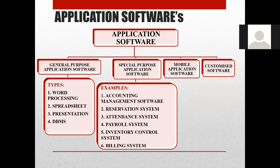Today we are going to learn about application softwares. Application softwares are designed for a specific task, for a particular purpose. These are not necessary for the operation of a computer, but they are designed to do a particular task. Like if I want to type letters, there are many types of software for that. If I want to do statistical calculations, I can use software that allows entering data in rows and columns with formulas and functions.